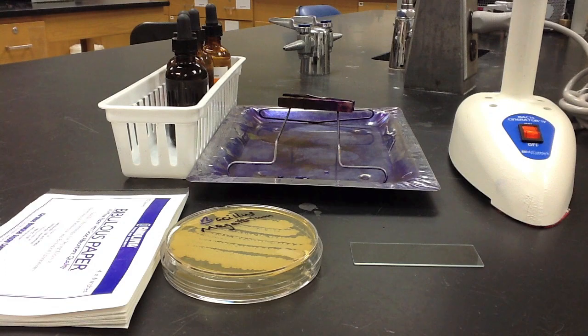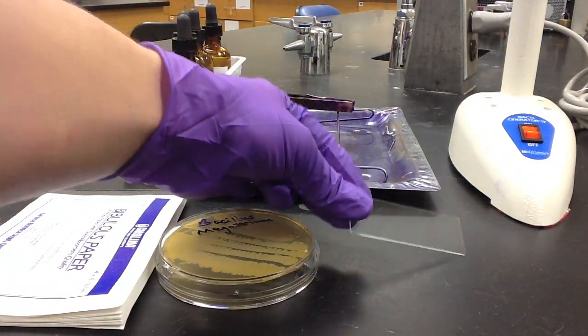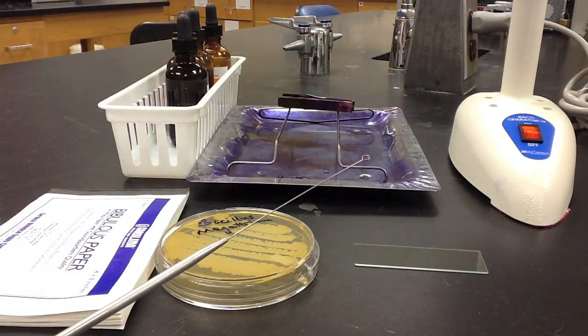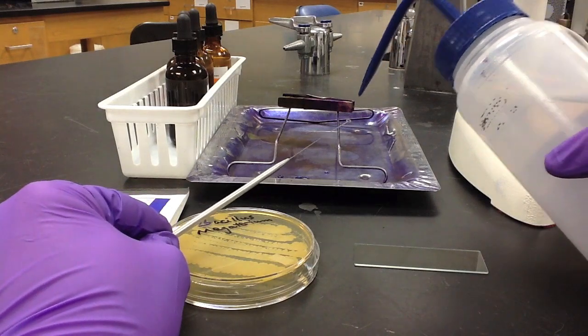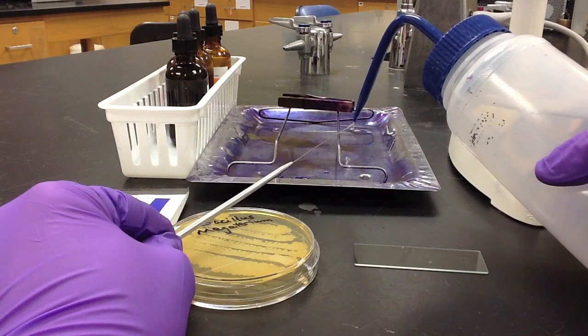We begin the Gram staining procedure by taking a clean microscope slide, an inoculating loop, and a bottle of deionized water. We'll spray the water through the loop until a single droplet is trapped, then place that single droplet onto the surface of the slide.